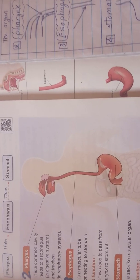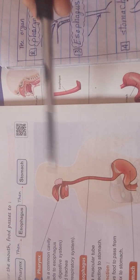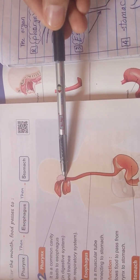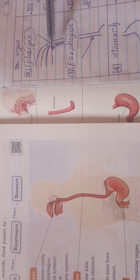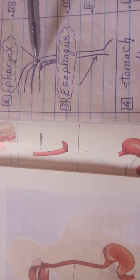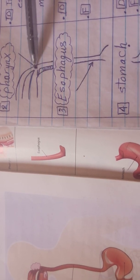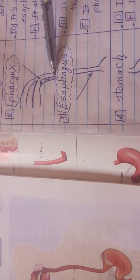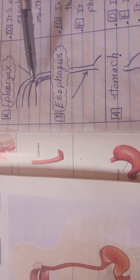Hi guys, today we will complete the second part of the digestive system. In the last video we studied the mouth. Now we go to the Pharynx. Pharynx is a common cavity that leads to the esophagus and trachea. That is the definition of the Pharynx.